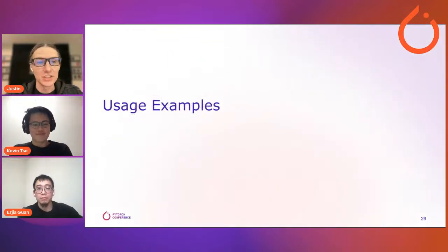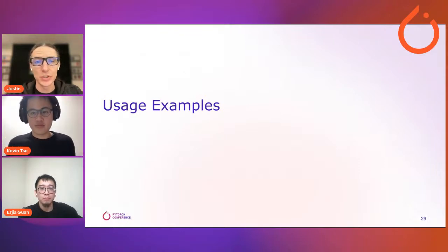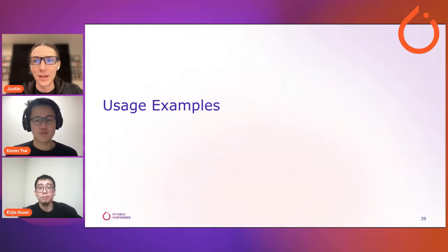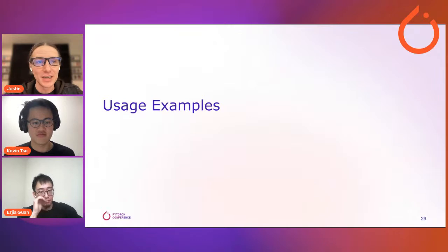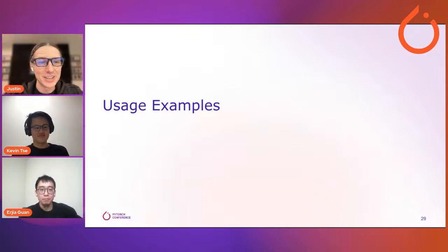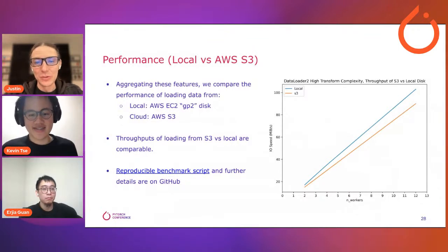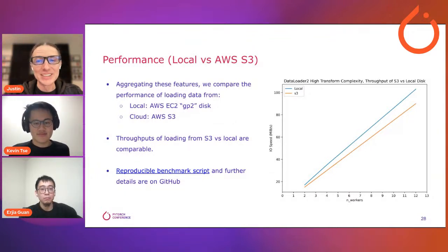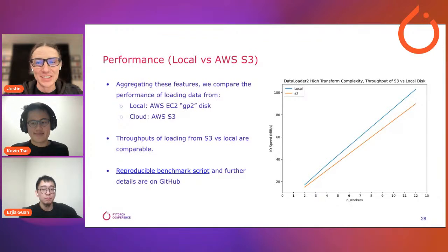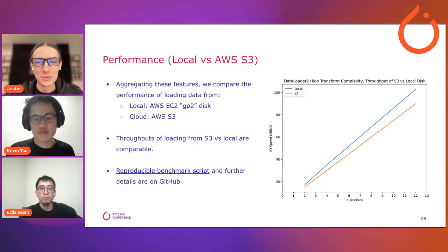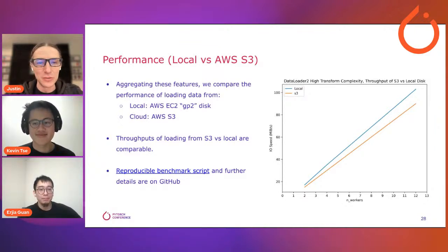We have a reproducible benchmark script on our GitHub for reference. The result showing local versus S3 performance — those lines are incredibly close. Nothing can beat local, but the S3 line is remarkably close. That's an amazing testament to how good the loading is through S3, which goes through the web with a lot of extra overhead, but it's pretty darn close.